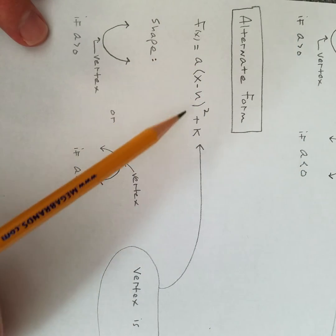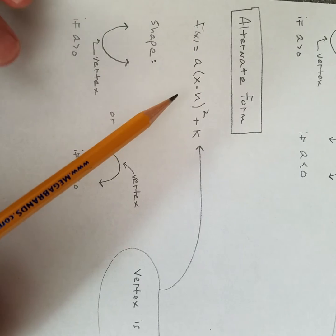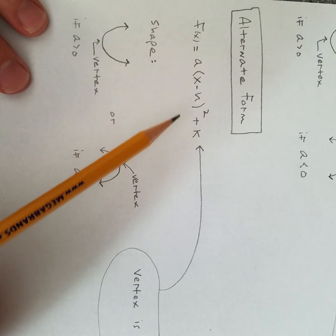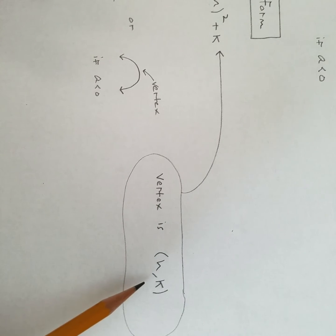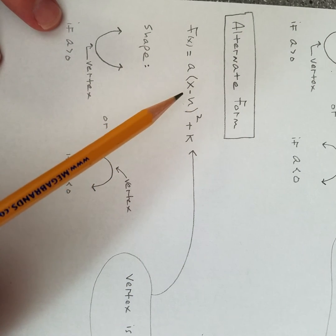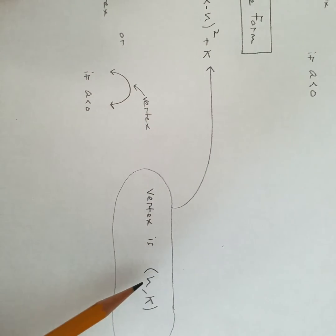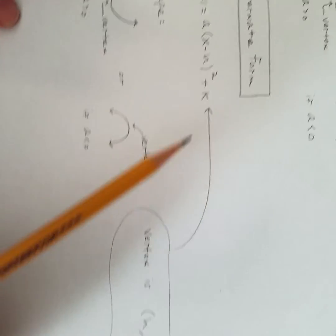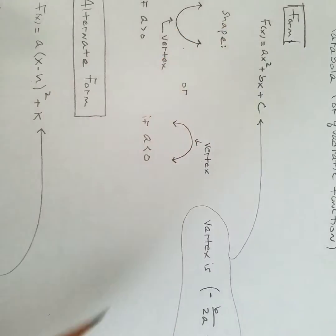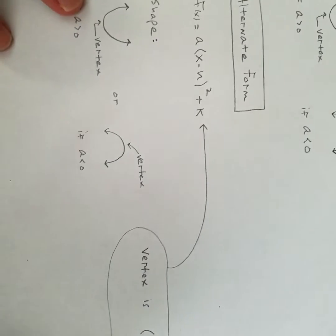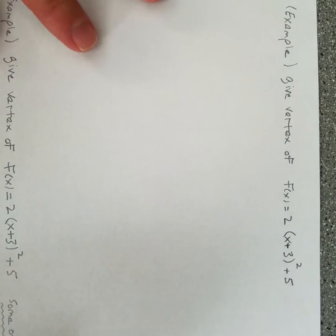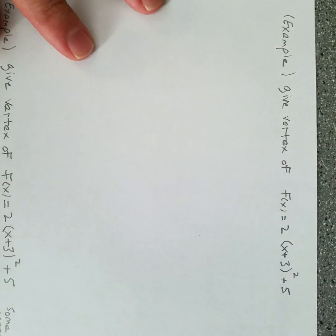So why bother with the alternate form? Well, if you have it in this form, you can read where the vertex point is right out of it. The vertex is h and k. The x minus whatever that number is — that's the x-coordinate of the vertex — and k is the y-coordinate. You don't have to do any math. With the other form, you have to do all this math to get the vertex.